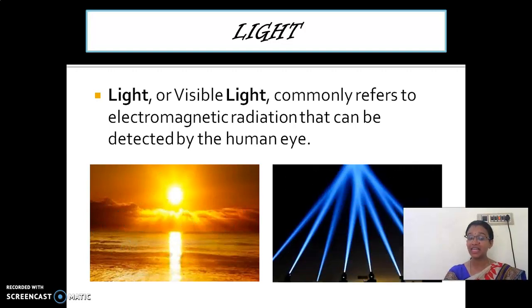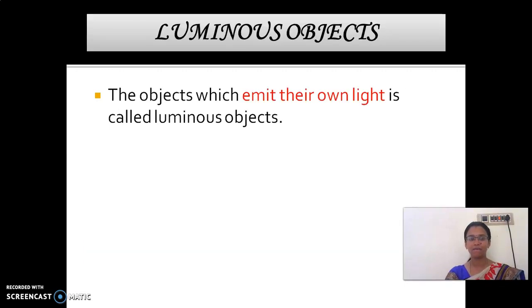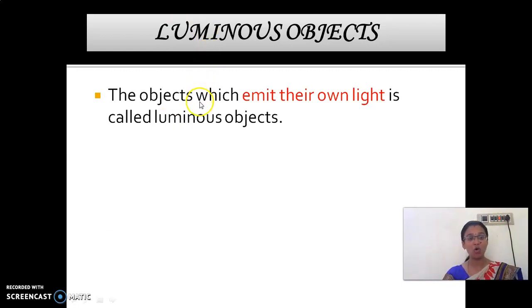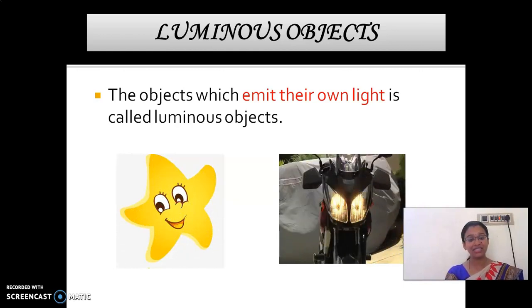Look at here, children. Sun is the main source of light, and we have some other sources of light which help us to see objects during night time. Now we have two different types of objects. The first one is luminous objects — the objects which emit their own light are called luminous objects. Examples are stars and lights in a pipe; they emit their own light.